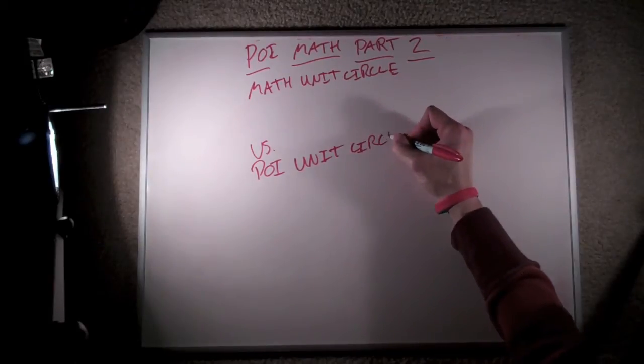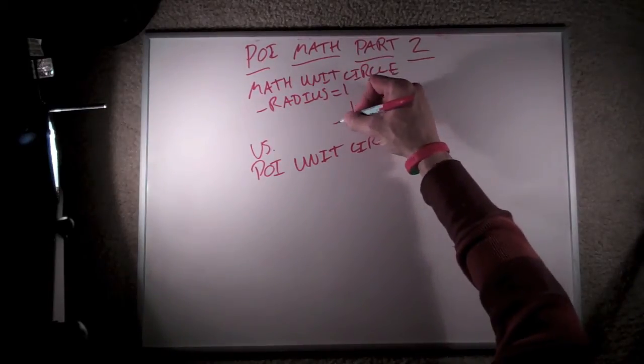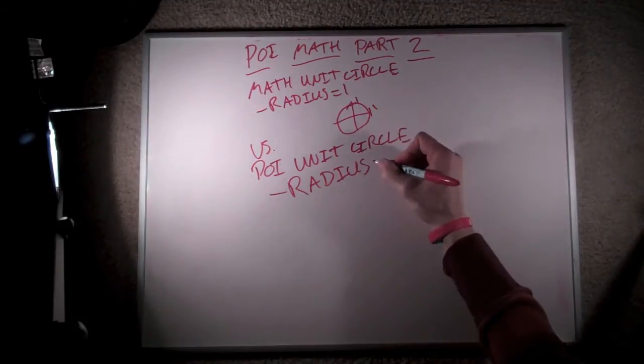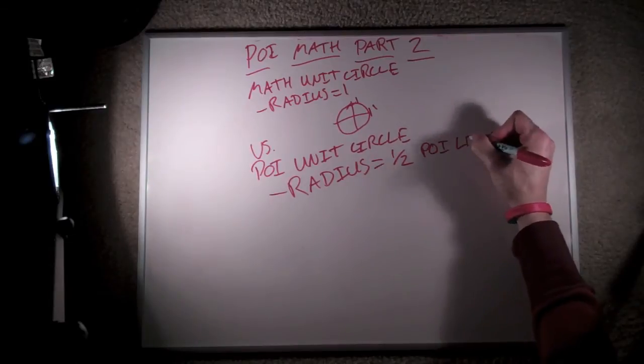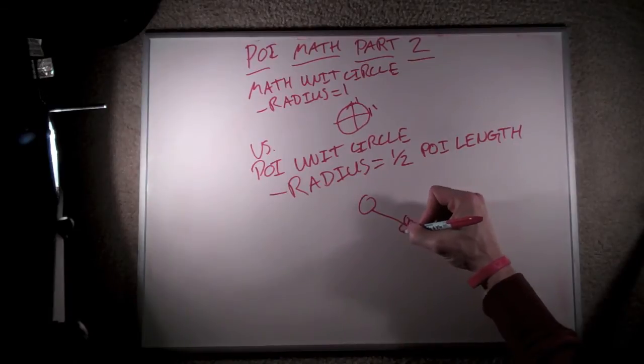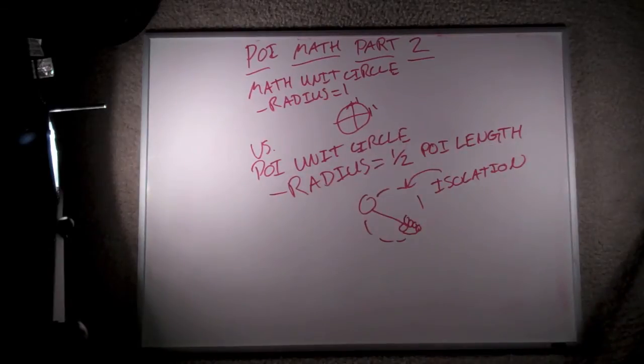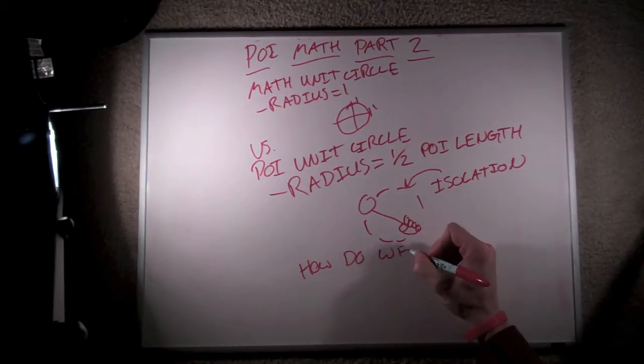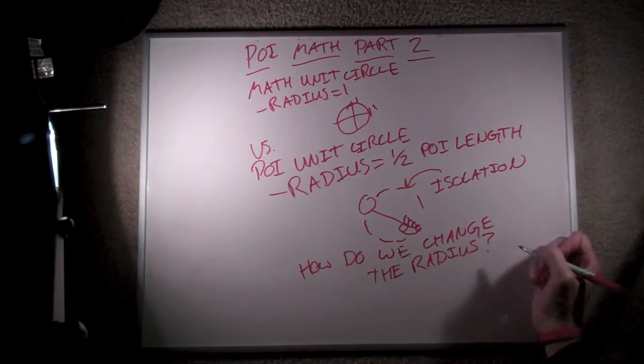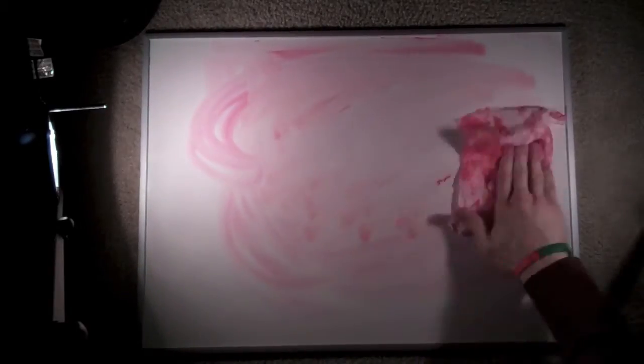You may recall from last week that when we created a unit circle using our parametric equations, the radius was always equal to 1, whereas when we create a unit circle in POI, it always has a radius of 1/2, the POI length. The reason for this is that the unit circle is constructed out of the basic idea that the POI head and the hand are moving around the same size path. This is what's called an isolation. The question is, how can we make the radius in our parametric equations the same as it is in a POI unit circle pattern?